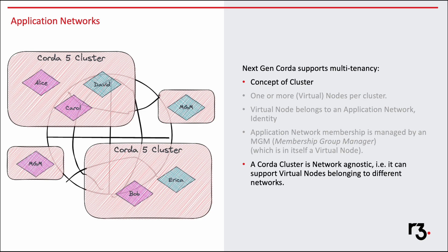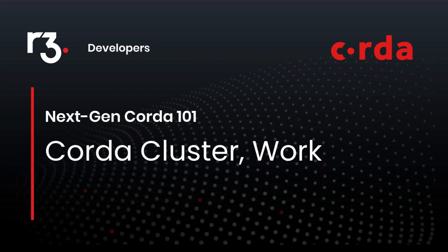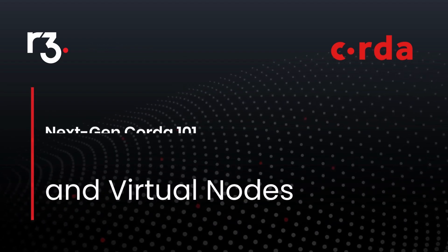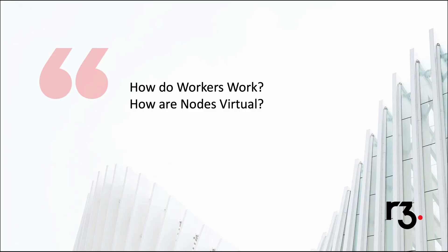As you can see in the diagram, Alice and Carol are part of the same application network. They are interacting with David, who is part of some other application network. But still, they are co-hosted in the same cluster. We have seen worker scaling, but why do we have different types of workers and how do they work with virtual nodes?